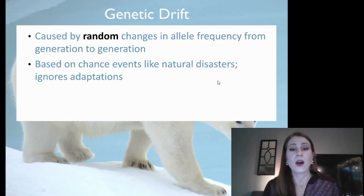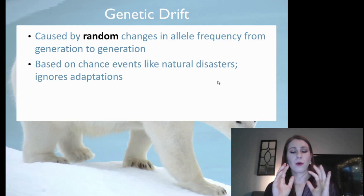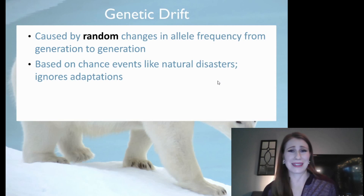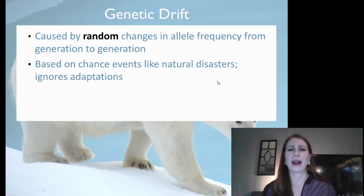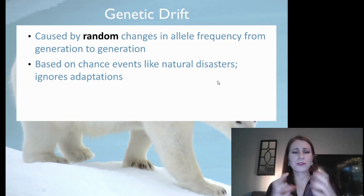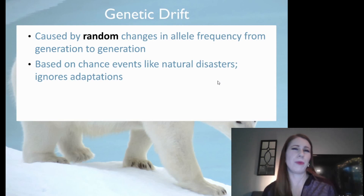Here's what that means. Over time, things are going to happen to a population. Let's give a population of bunny rabbits as an example. Wherever the bunny rabbits live, in a forest, there will be natural disasters that occur. A forest fire ignores adaptations — it doesn't care what color a bunny rabbit is, or if a bunny rabbit has bigger or smaller ears. All those little adaptations that may help a bunny rabbit survive from a predator won't help it in a natural disaster.